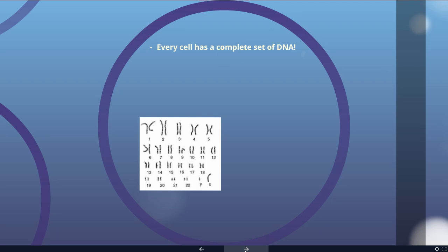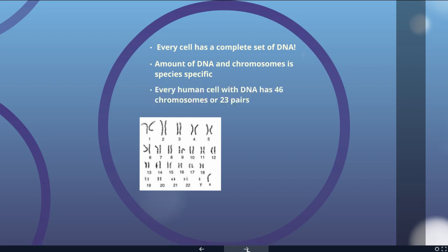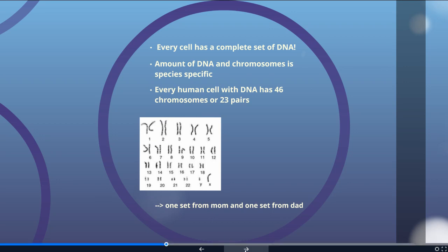Every single cell has a complete set of DNA. The number of chromosomes is a species-specific characteristic. Humans have 46 chromosomes, or 23 pairs. You have 46 because you get one set from mom and one set from dad — chromosome 1 has one from mom and one from dad, chromosome 2 has one copy from mom and one from dad. So you have two copies of each chromosome in every cell that has a nucleus.